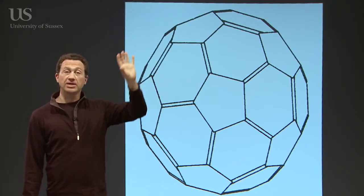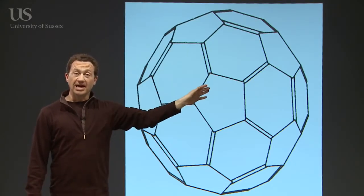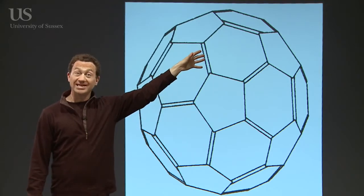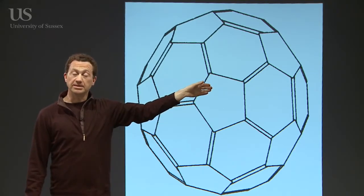This is showing the same thing in a drawing. You can see the double bonds here between the hexagons, between two hexagons, and the single bonds in the pentagons.